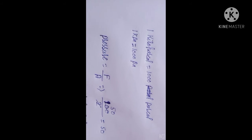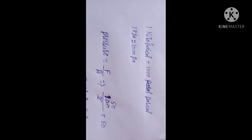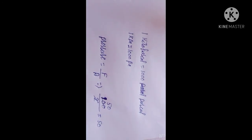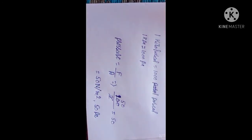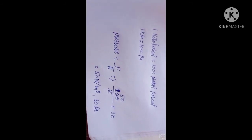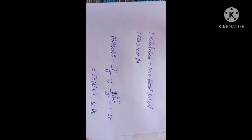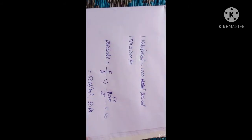Our question is: find pressure if force equals 100 Newton and area equals 2 meter square. Here 100 divided by 2 gives 50, so we write it as 50 Newton per square meter or 50 Pascal. That is the introduction about pressure.